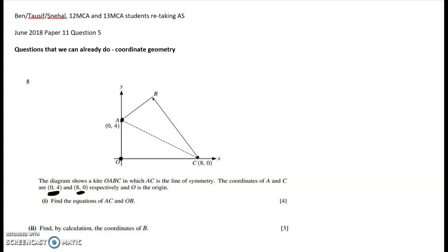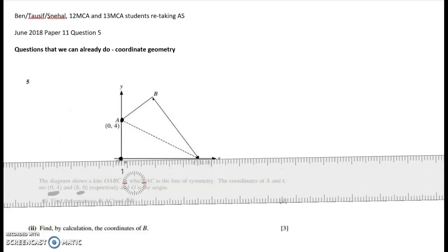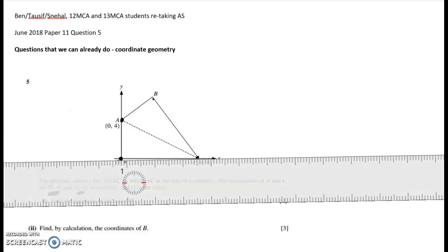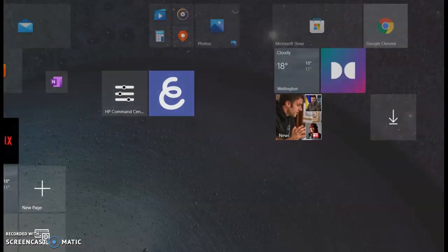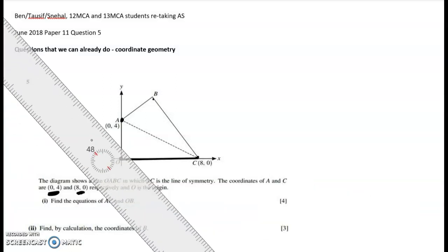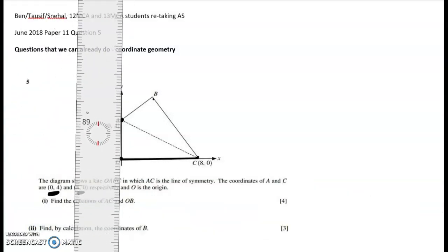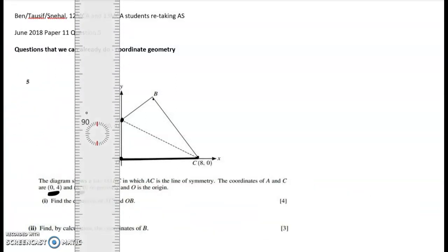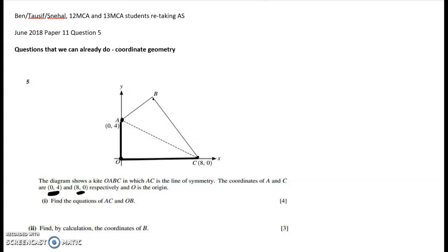And O is the origin. Now the fact that it's a kite is actually important for this question, and I'm just going to rule this out and make it a bit more obvious what's going on, because if you do this, you'll spot the key to the second part of it faster. Right, so there we are, there we've got a kite there.